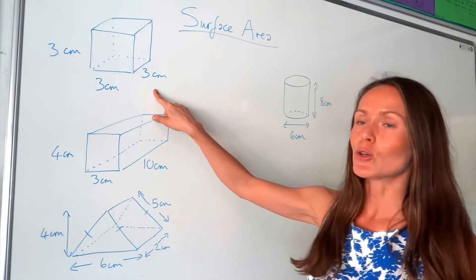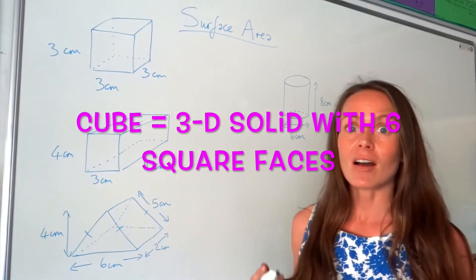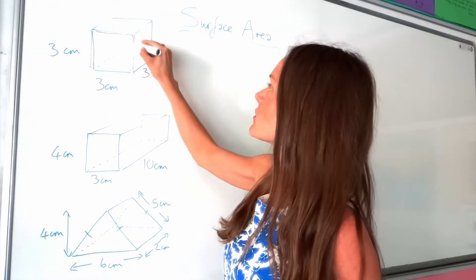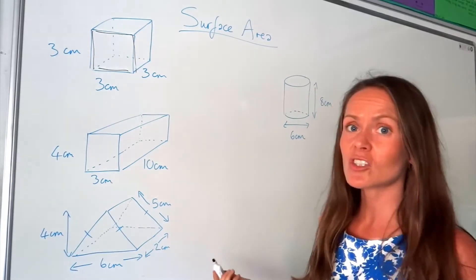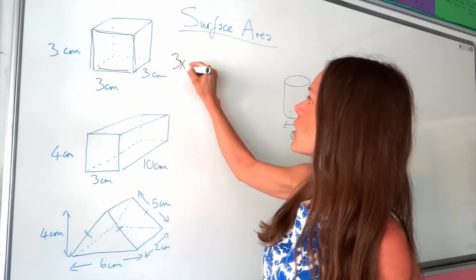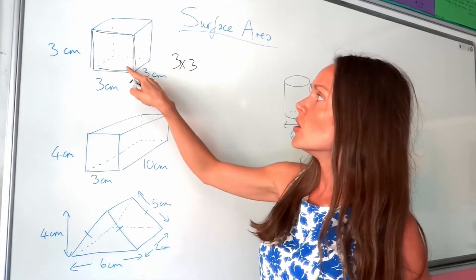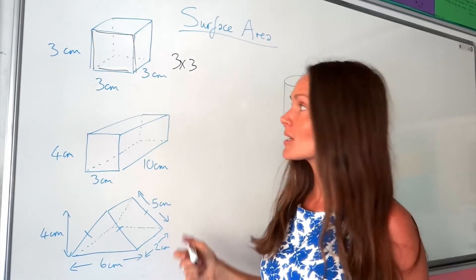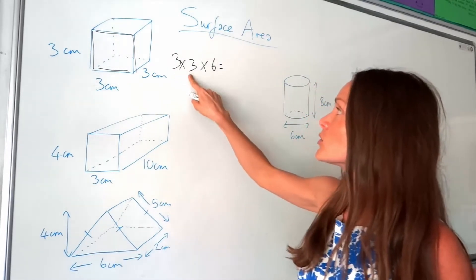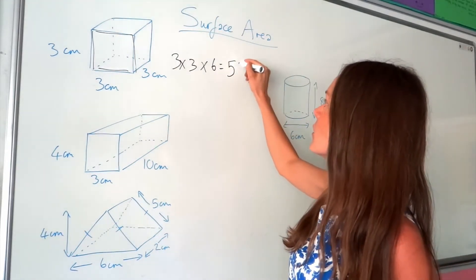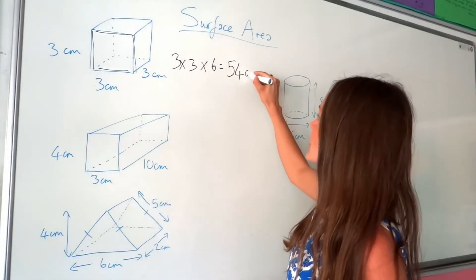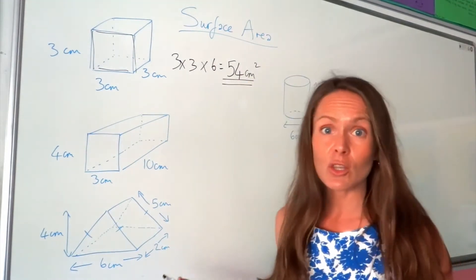So in the first one we've got a cube, so all the sides are identical — they're all square sides. To work out the area of one side, say this face here, well it's just a square, so you just do base times height. If we've got 6 sides altogether, we need to multiply that answer by 6. So 3 times 3 is 9, and 9 times 6 is 54, and the unit, because it's surface area, is centimetres squared. So that's the answer to the first one.